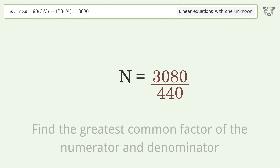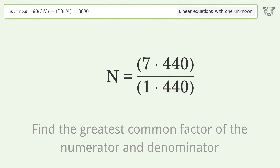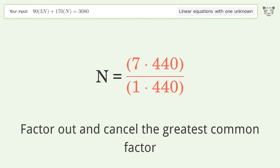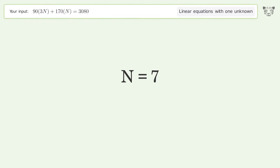Find the greatest common factor of the numerator and denominator, factor it out and cancel it. And so the final result is n equals 7.